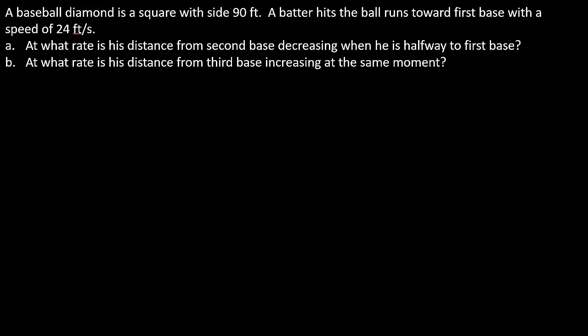Let's look at a related rate problem. It says a baseball diamond is a square with 90 feet. A batter hits the ball and runs towards first base with a speed of 24 feet per second. We've got two questions to answer: at what rate is his distance from second base decreasing when he is halfway to first base? And part B, at what rate is his distance from third base increasing at the same moment?